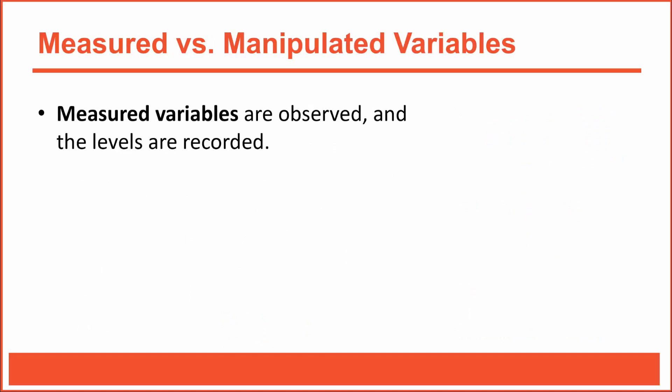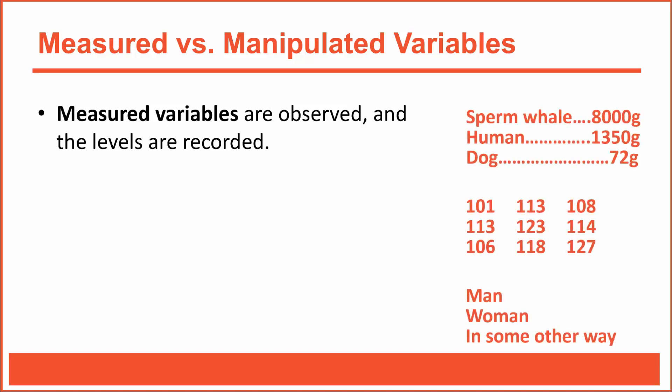Now, researchers either measure or manipulate variables, and the distinction is important. When conducting research, most variables are simply measured. For example, the average brain weight of a species is a measured variable—once you gain access to a sperm whale's brain, you measure its weight using some sort of scale. When I study IQs of college students, I simply measure their IQ using a standardized intelligence test. And when studying gender, I simply measure each person's response to a question about how they describe themselves. Measuring a variable is just a matter of recording its natural level on some sort of measurement device, such as a digital scale, an intelligence test, or a survey question. As a researcher, I had no control over those variables.